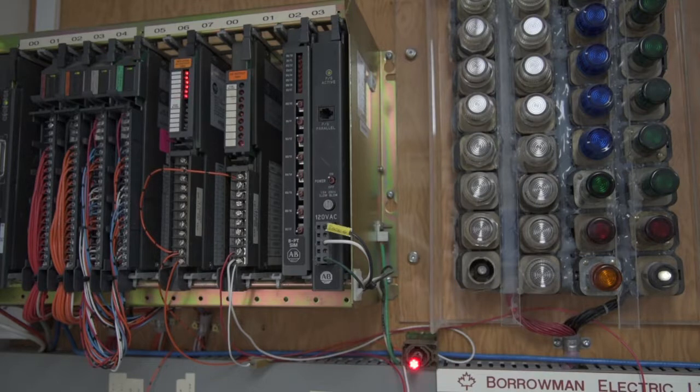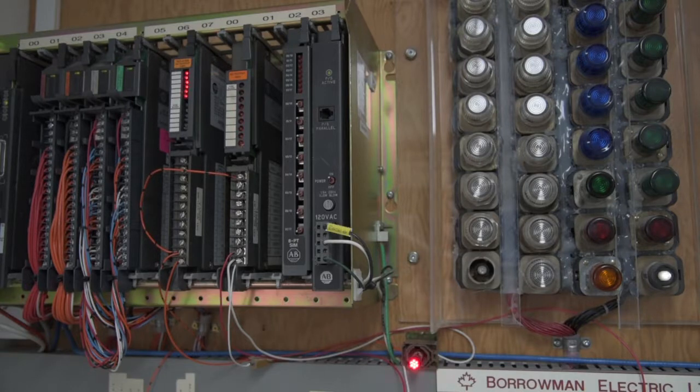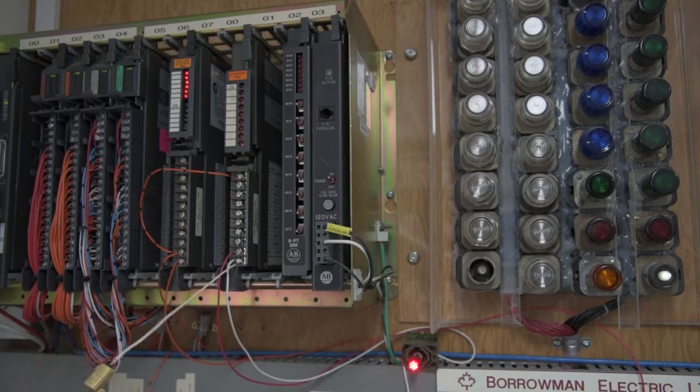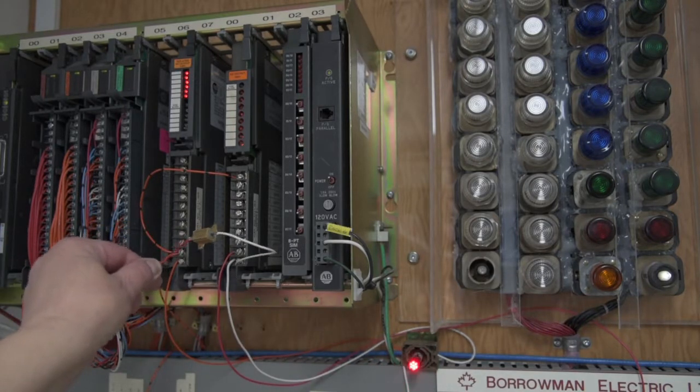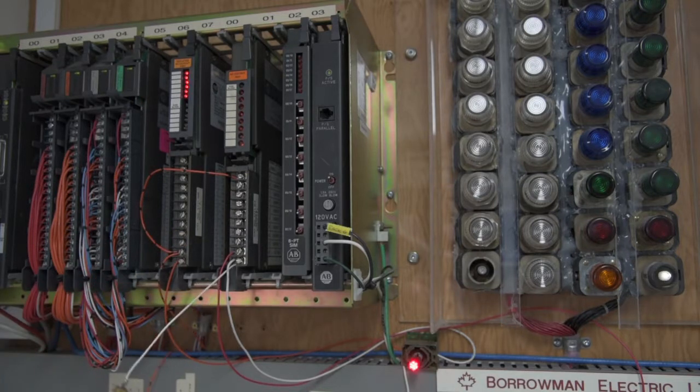Now, the Allen-Bradley specs say put a 2.5K 10-watt resistor between neutral and your output.